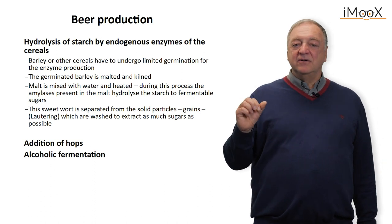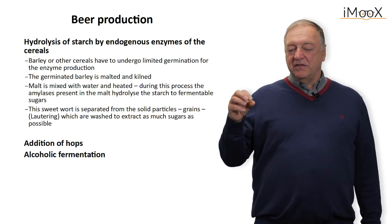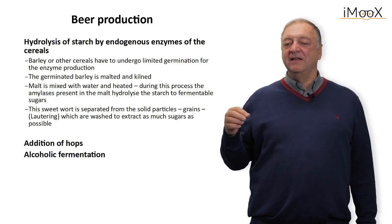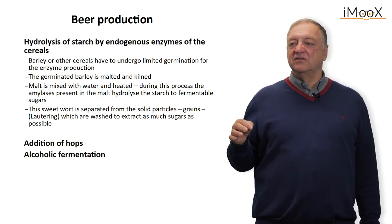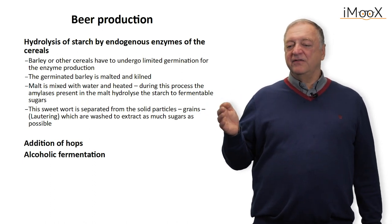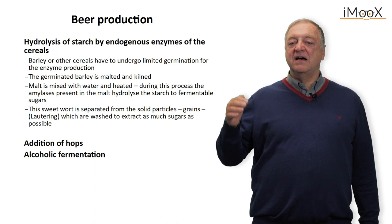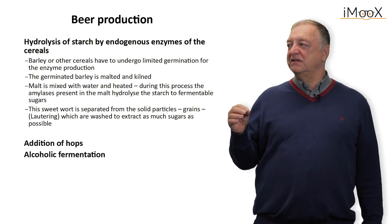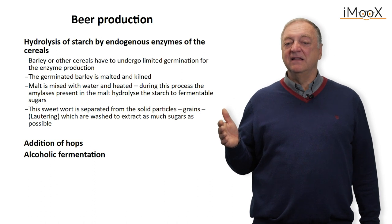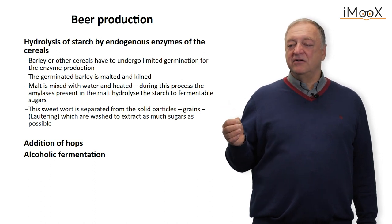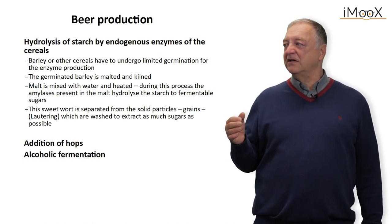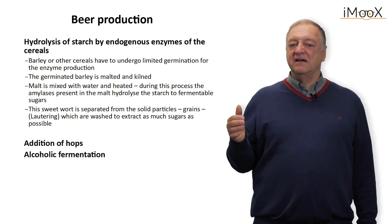The malt is then heated with water, and during this heating process the enzymes become active and hydrolyze the starch. The enzymes are heat stable, so temperatures of 50, 60, or 70 degrees are possible for the hydrolysis, which is fast and also eliminates competing microorganisms that could ferment glucose into other products or into biomass.